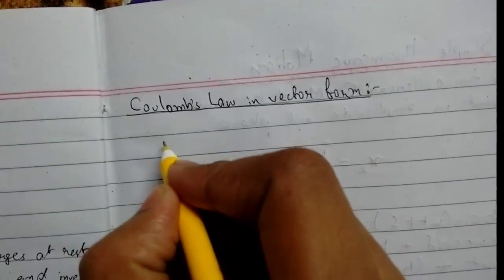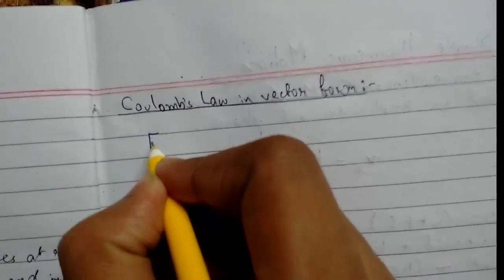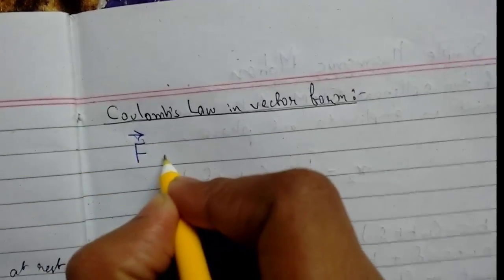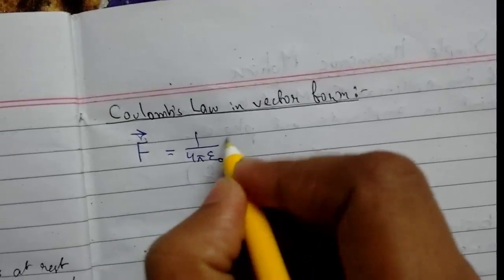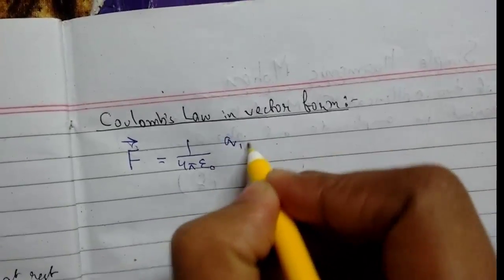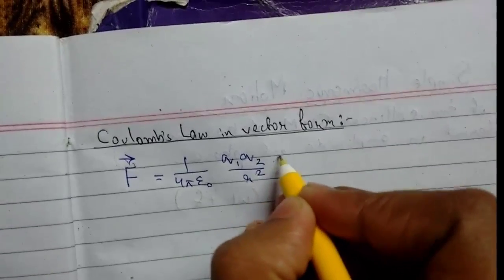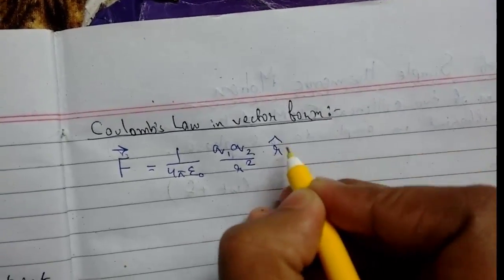I am writing the formula directly. F vector - as you know, force is a vector quantity - equals 1 by 4π epsilon naught for free space, times Q1 Q2 upon R squared, times R unit vector.